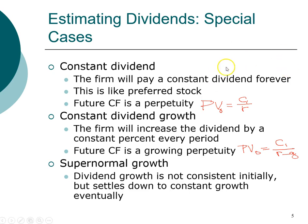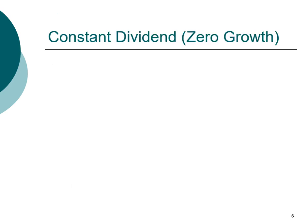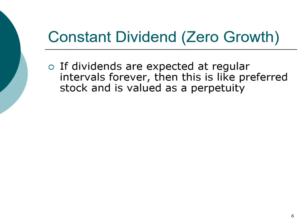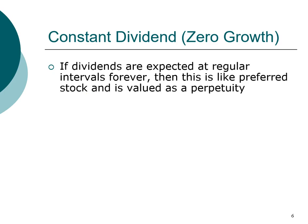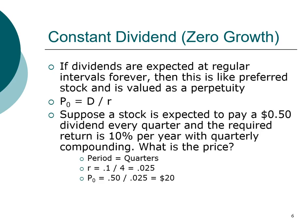Now let's look at each of these special cases individually, starting with the constant dividend case. The constant dividend case assumes the growth rate is zero — it doesn't change. This is most commonly found in preferred stock. The value of the stock is the present value, so we evaluate it using the perpetuity formula. Note that in the book they simply replace C (cash flow) with D (dividend), so the cash flow for a stock is dividend. You can understand the concept and apply the formula in a more general setting.